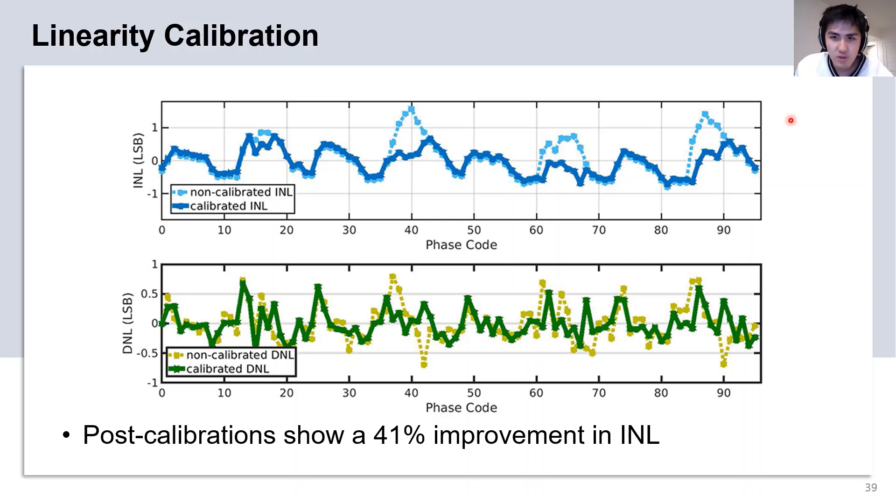Here we present the INL and DNL of the PI, simulated at a typical corner at 60 degrees Celsius. While the transient noise is enabled, there is no mismatch introduced to the system. Looking at the INL plot, we see that post-calibration, there is a 41% improvement in the INL.